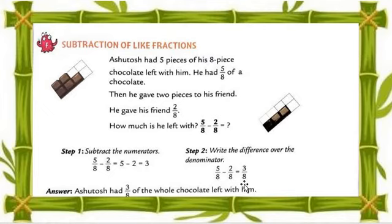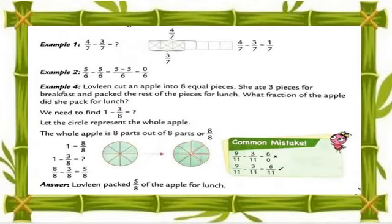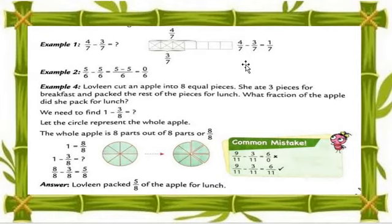Now let's move on to Example 1: 4 upon 7 minus 3 upon 7. We only subtract the numerators: 4 minus 3 equals 1. So the answer is 1 upon 7 — a very easy question. Example 2: 5 upon 6 minus 5 upon 6 equals 5 minus 5 upon 6, which is 0 upon 6.